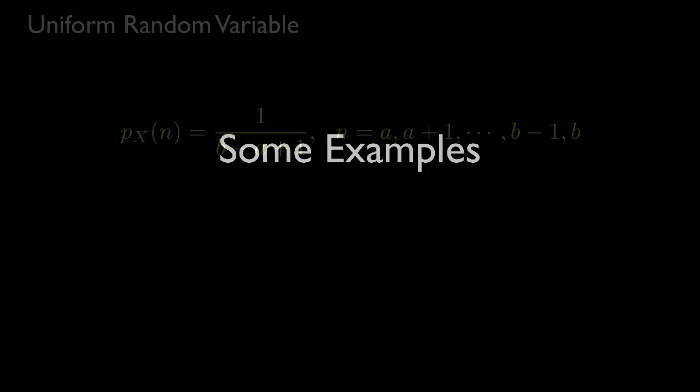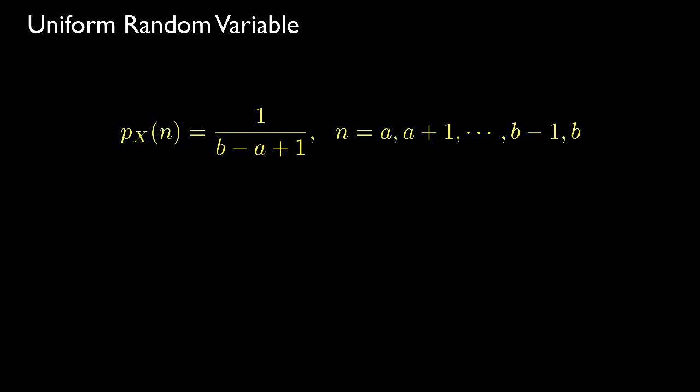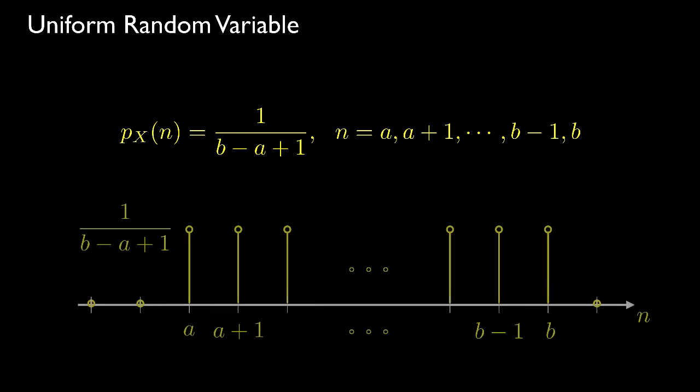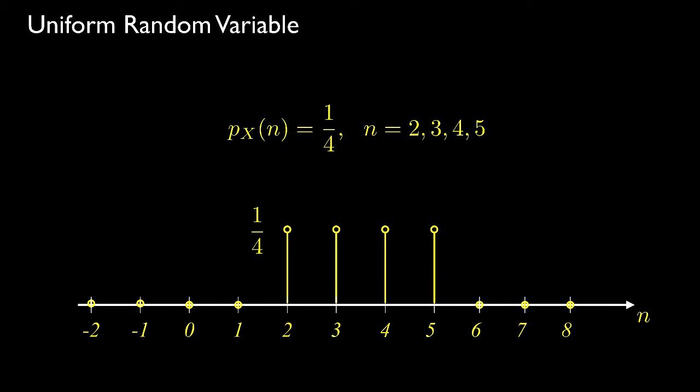Now let's look at some common discrete random variables. A discrete uniform random variable takes its values over a discrete interval from a to b, and the probability mass function takes a constant value equal to 1 divided by b minus a plus 1. For example, if a equals 2 and b equals 5, then the probability mass function equals one fourth over the interval from 2 to 5.